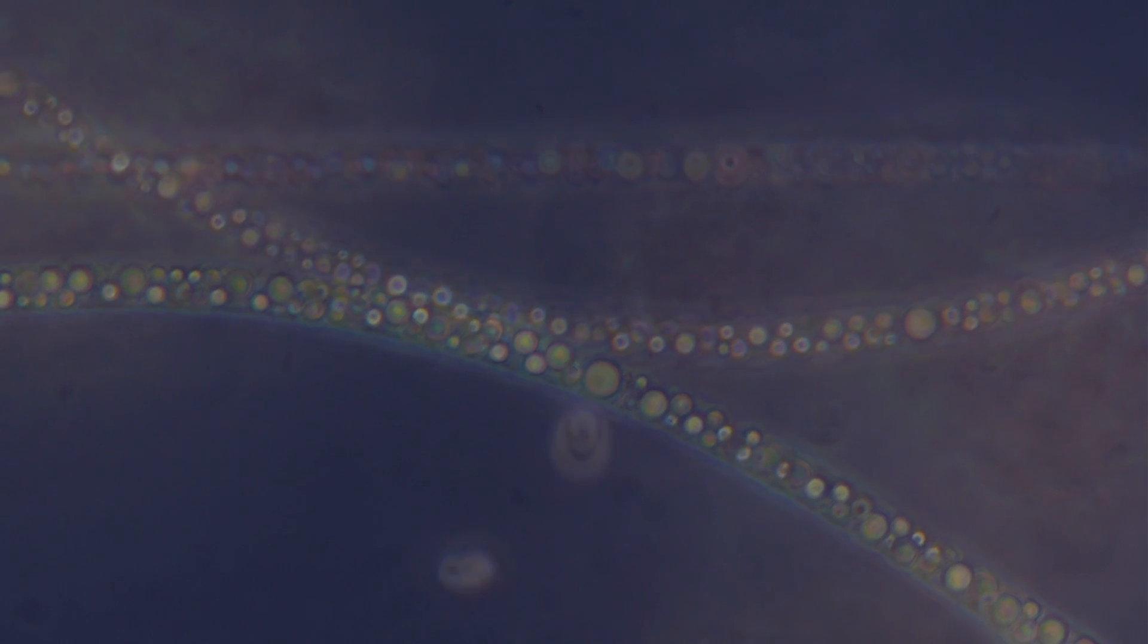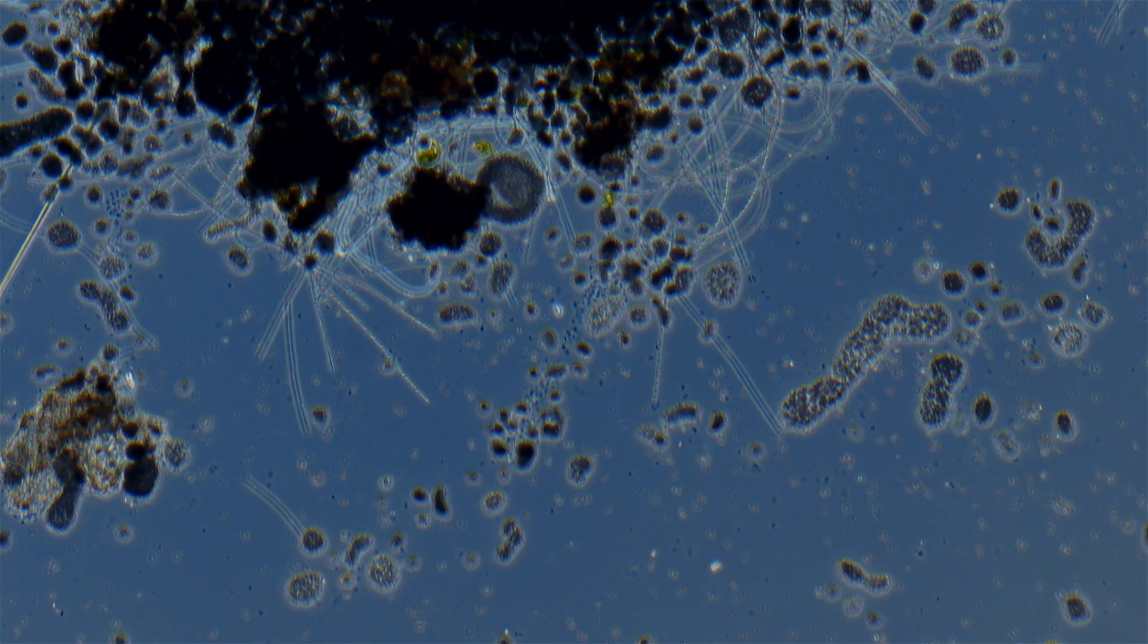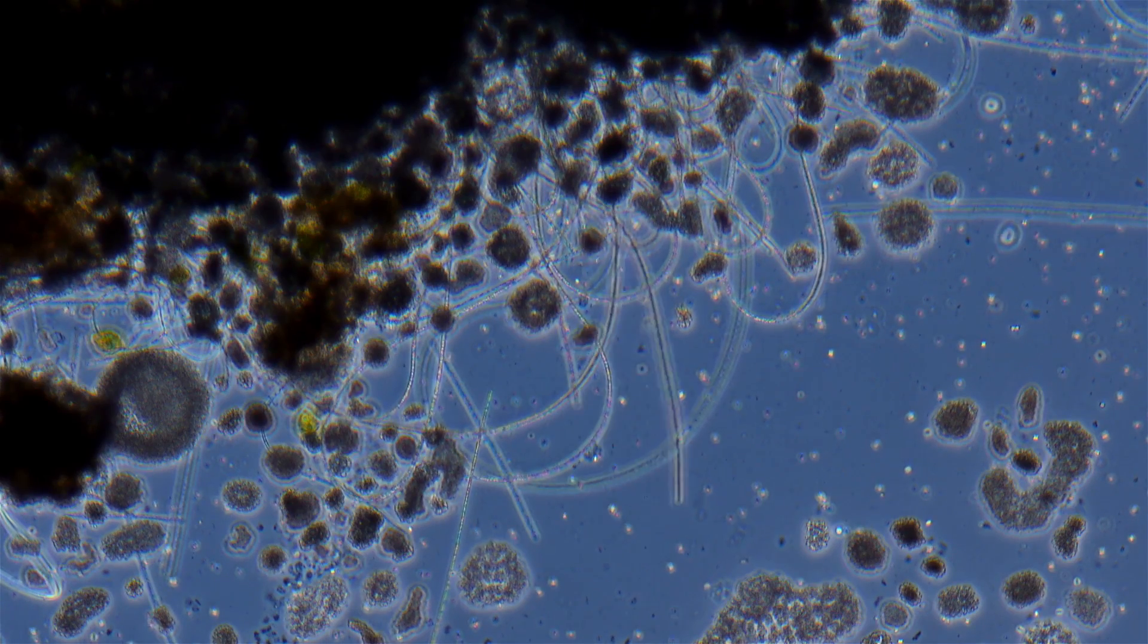This became a permanent alliance, and the sheltered cyanobacterium eventually morphed from a distinct organism into the organelle we call the chloroplast. Chloroplasts, the site of photosynthesis in plants.